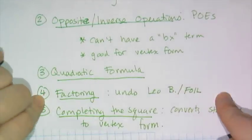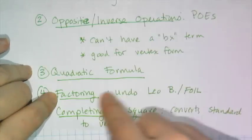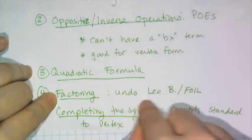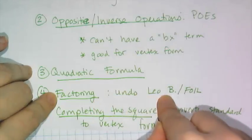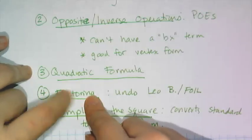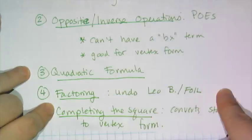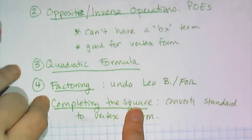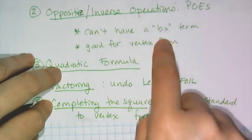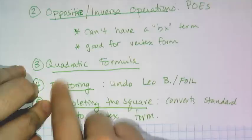Factoring is probably the fastest way to solve. So if a quadratic is factorable, then you're going to want to solve it by factoring. And basically what factoring is, it is the undoing of LEOB multiplication or FOIL. It undoes FOIL. Now the problem is not everything is factorable, which leads us to completing the square, which is probably the best way to solve a quadratic. And what completing the square is, it's basically the conversion between standard form to vertex form, so that then you can use the POES. And what it does is it makes factoring work for all quadratics.